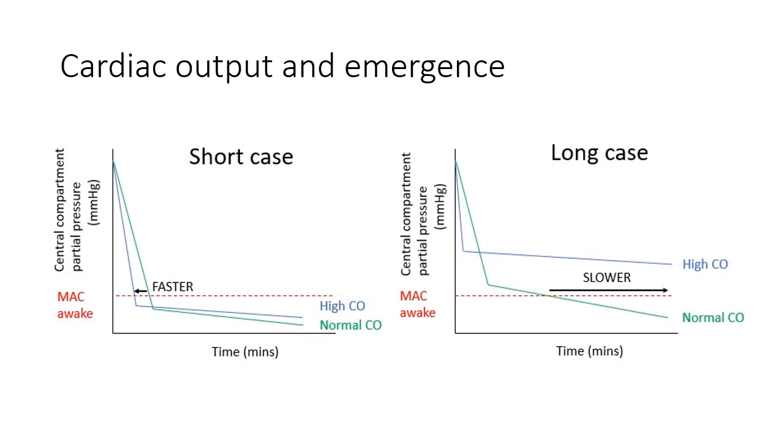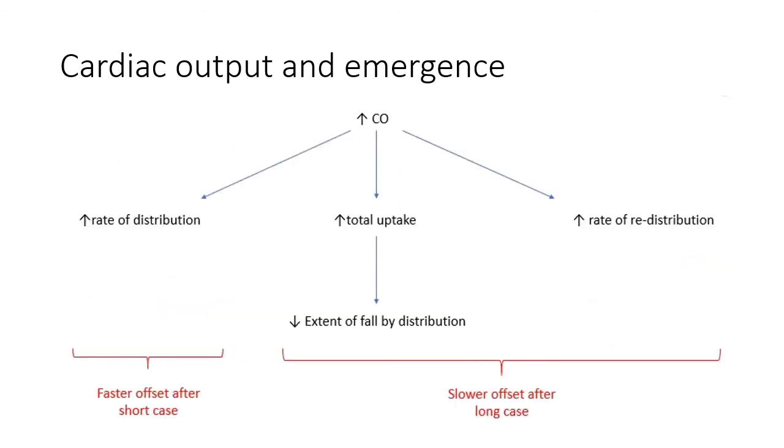It's the same story with inhalational agents. After a case of any reasonable length of time, high cardiac output will result in slower offset because we had to deliver a higher inspired partial pressure to achieve and maintain the desired depth of anesthesia. Here's another way of looking at it. High cardiac output results in faster offset after a short case due to a higher rate of distribution. However, high cardiac output results in slower offset after a long case because of a reduction in the extent of fall during distribution and also an increase in the rate of redistribution.